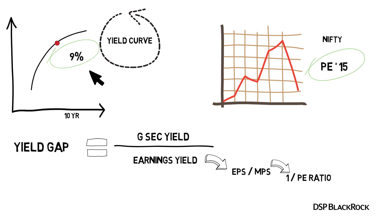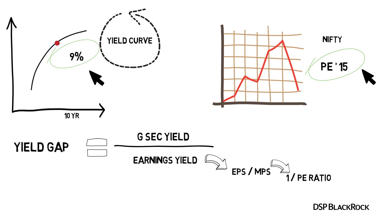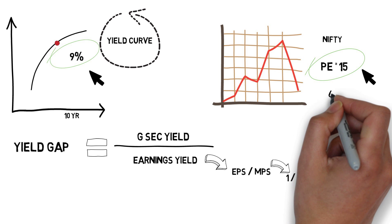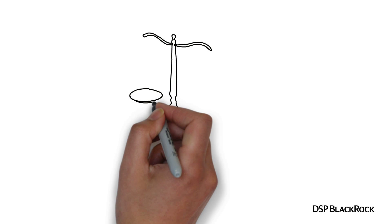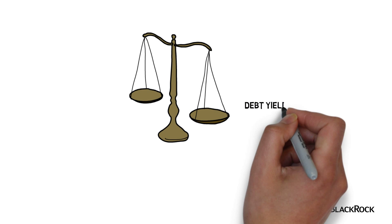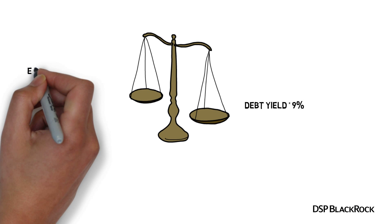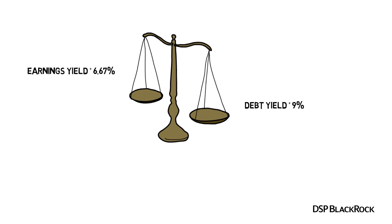Let's go back to the problem at hand. The 10-year gsec is at 9% and the Nifty PE is at 15, which means the earnings yield is 1 divided by 15, equal to 6.67%. We can now compare the two: the debt yield is at 9% and the earnings yield is 6.67%.